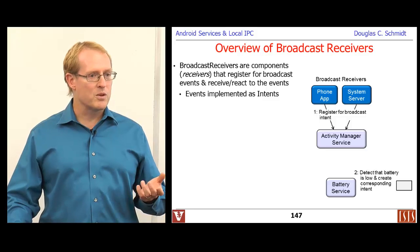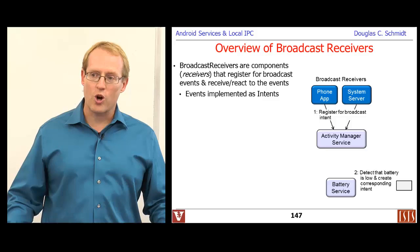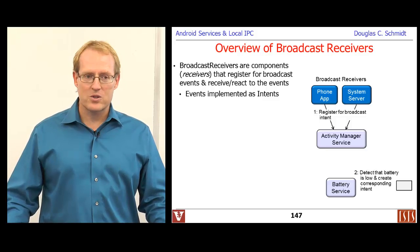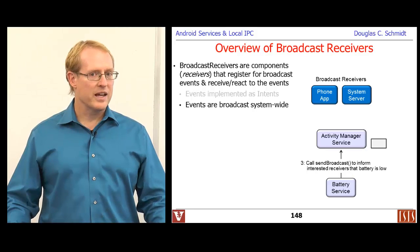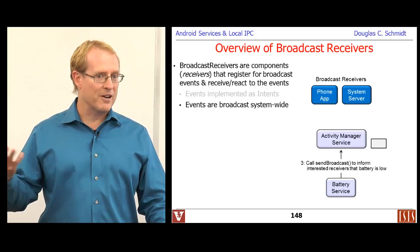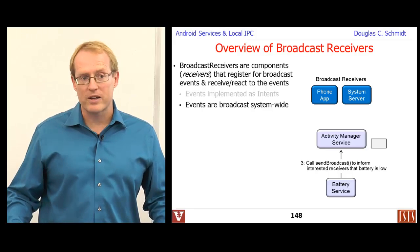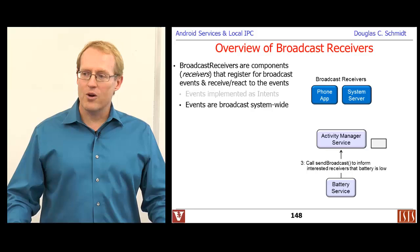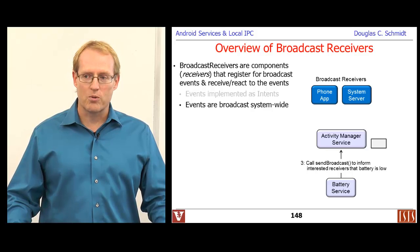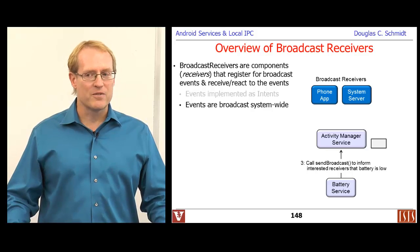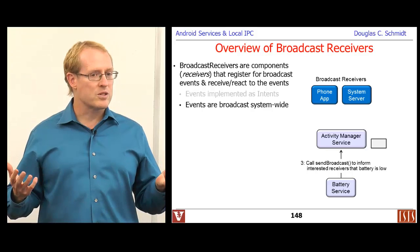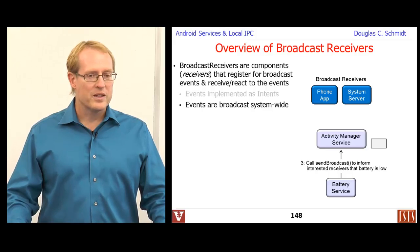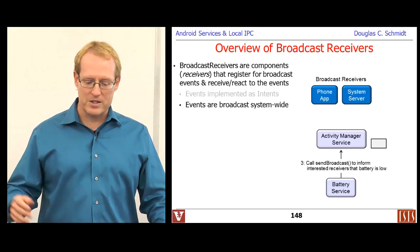For example, suppose we have a battery service that tracks how much charge is left. When the battery gets low, it broadcasts an intent saying the battery is low. That intent is sent via Send Broadcast or Send Ordered Broadcast, delivered through the Activity Manager Service, which keeps track of all interested receivers. There are different kinds of receivers: dynamically registered ones and statically or implicitly registered ones.